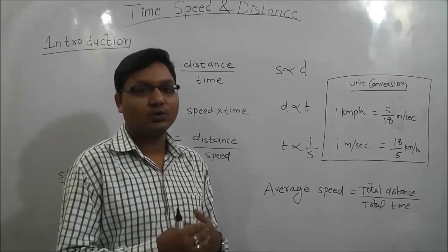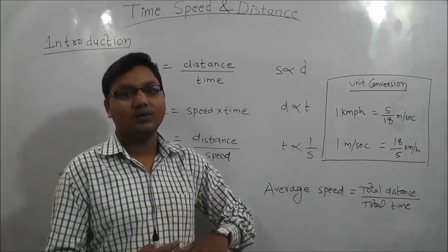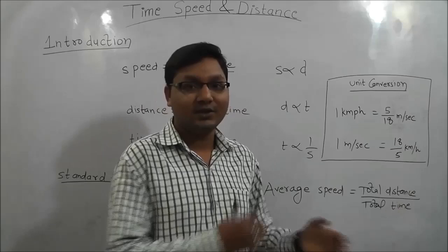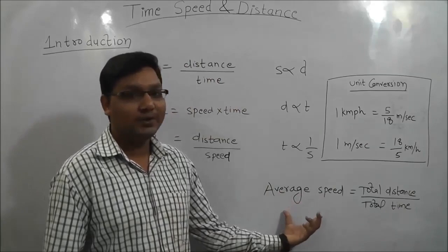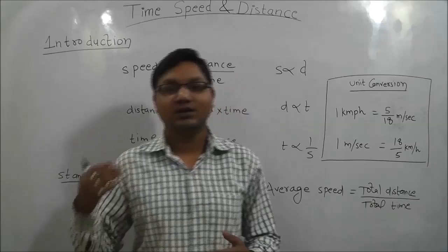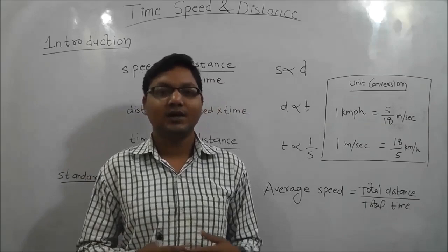The last thing to remember is the formula of average speed. Suppose a question says he travels 20 km at speed x km per hour and another y km at z km per hour — what is the average speed? This type of question is solved using average speed, and the formula is total distance traveled upon total time.